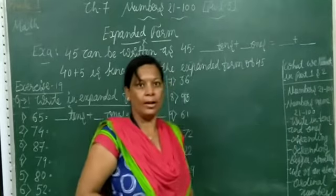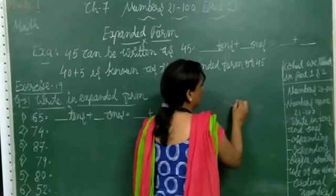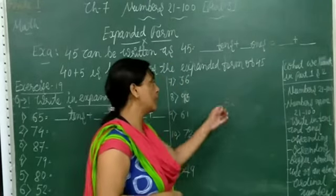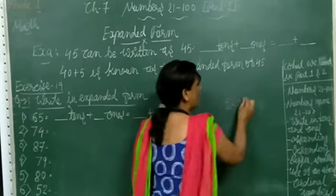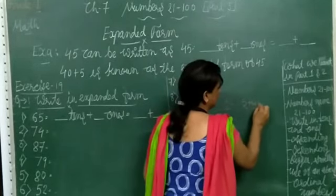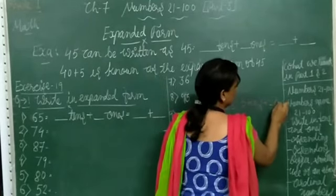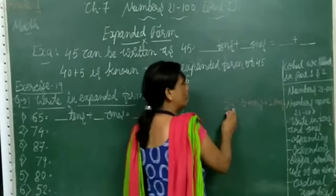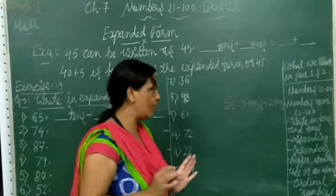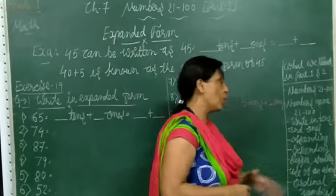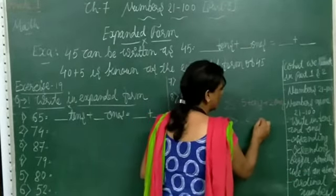Now how to bifurcate the number into 10s and 1s. For example, the number is 52. In 52, how many 10s? 5 10s. And how many 1s? 2 1s. So in 52, 5 10s and 2 1s. Now bigger and smaller — use greater than, less than, or equal.